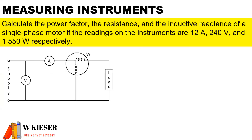If we take a single phase motor and connect it up to a single phase circuit with our different measuring instruments across the circuit, and we need to calculate the power factor, the resistance, and the inductive reactance of a single phase motor, the readings on the instruments are 12 amps, 240 volts, and 1550 watts respectively.